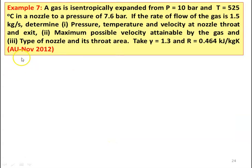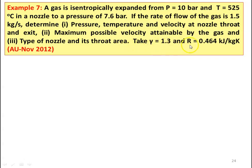Example number 7 from November 2012 question paper. A gas is isentropically expanded from pressure of 10 bar and temperature of 525 degree Celsius in a nozzle to a pressure of 7.6 bar. If the rate of flow of the gas is 1.5 kilograms per second, determine pressure, temperature and velocity at the nozzle throat and exit, maximum possible velocity attainable by the gas, and the type of nozzle, its throat and throat area. Take gamma equal to 1.3 and R equal to 0.464 kilojoules per kilogram Kelvin.